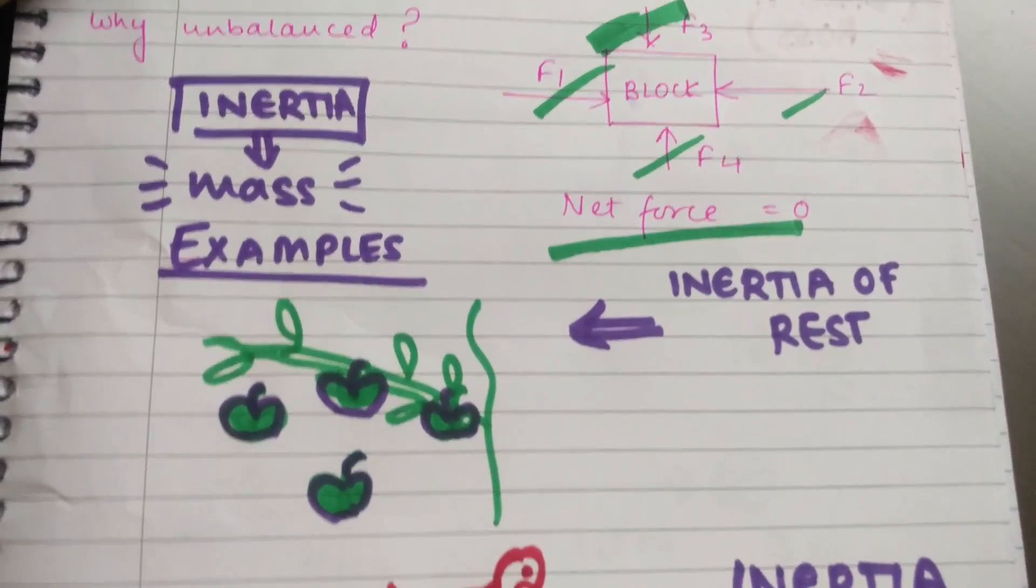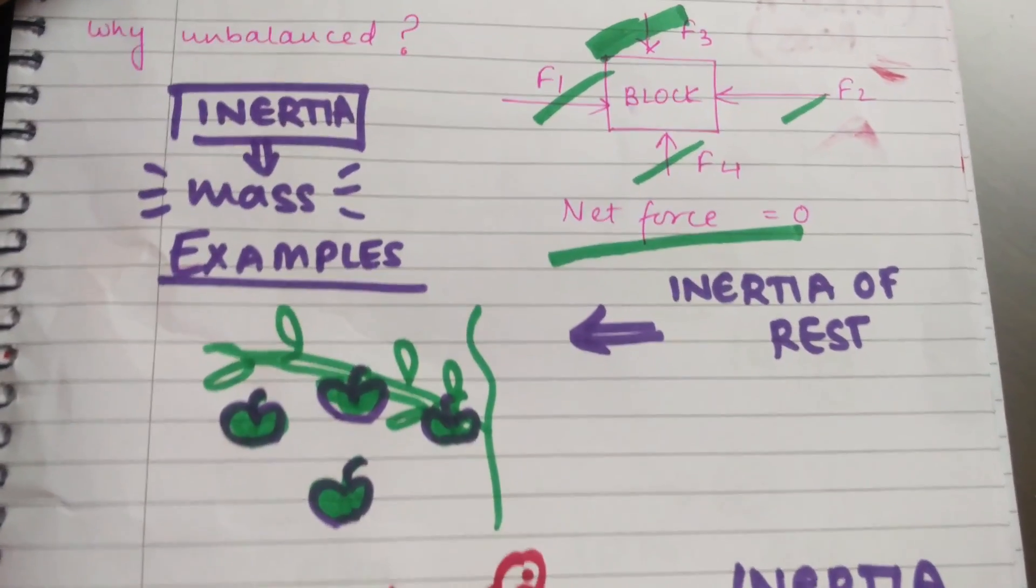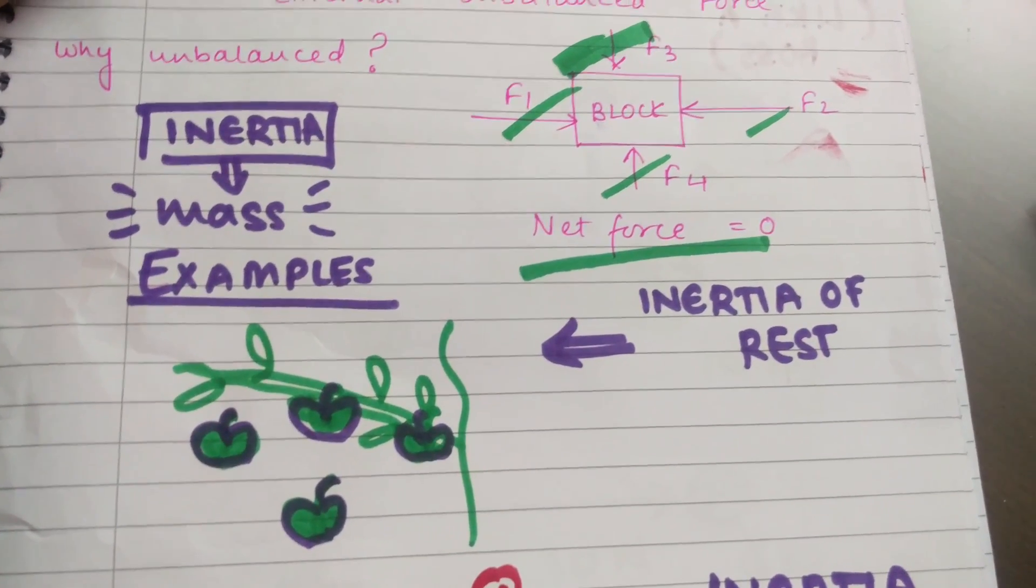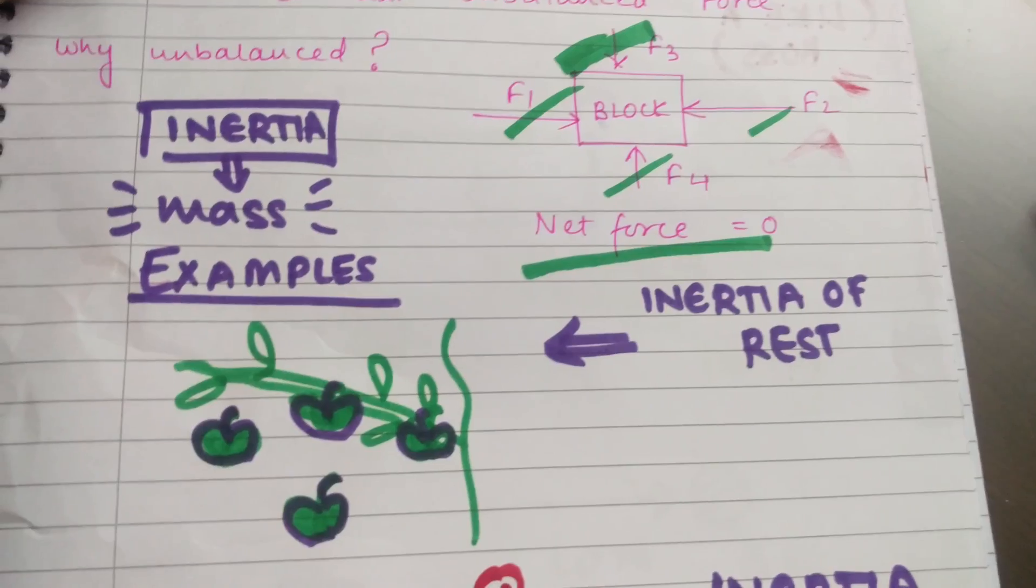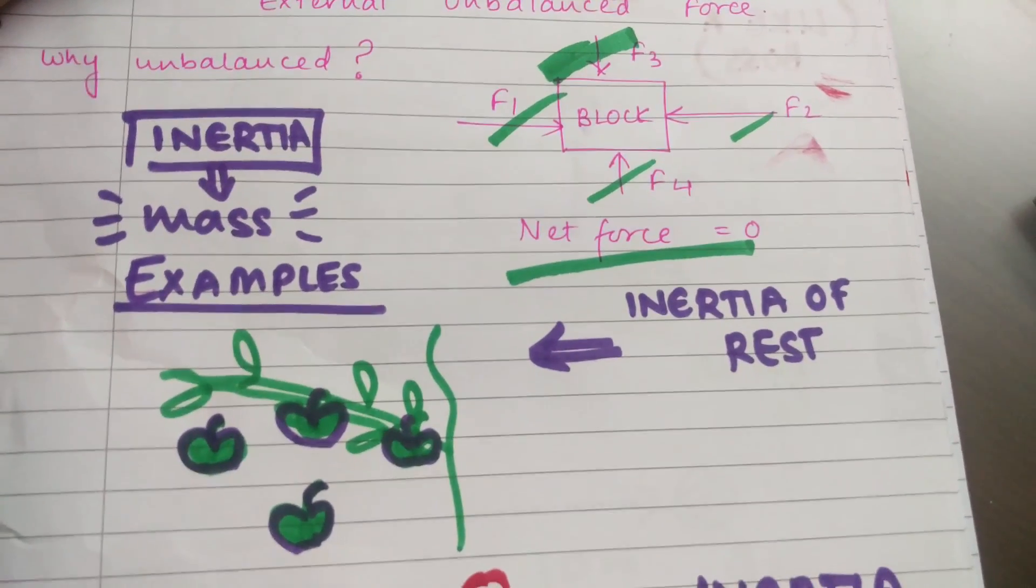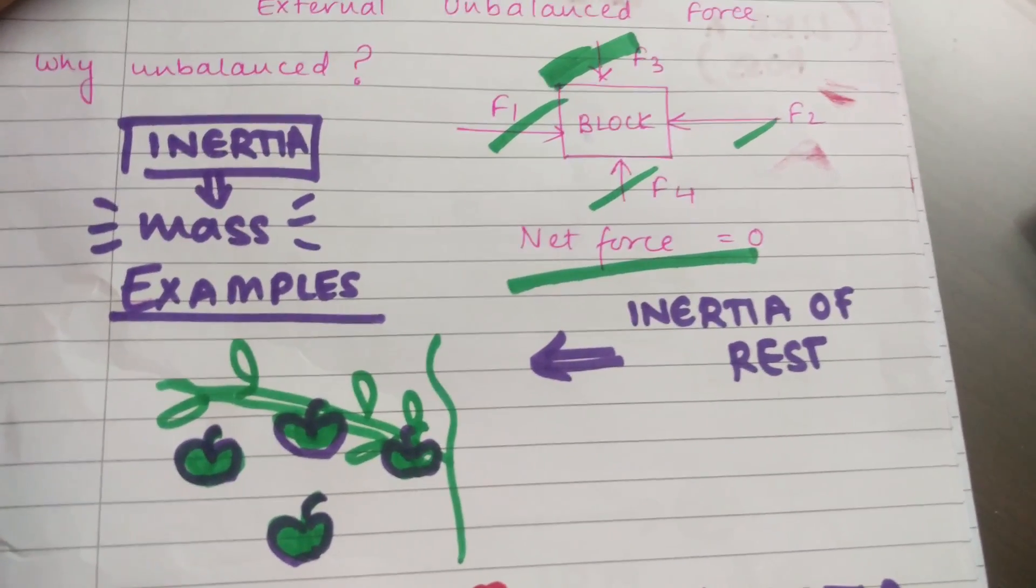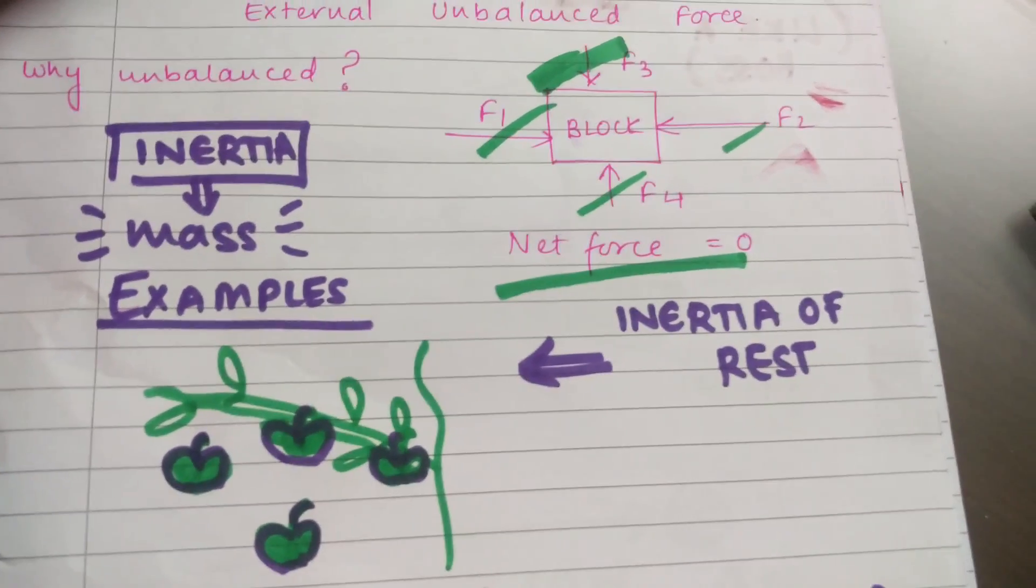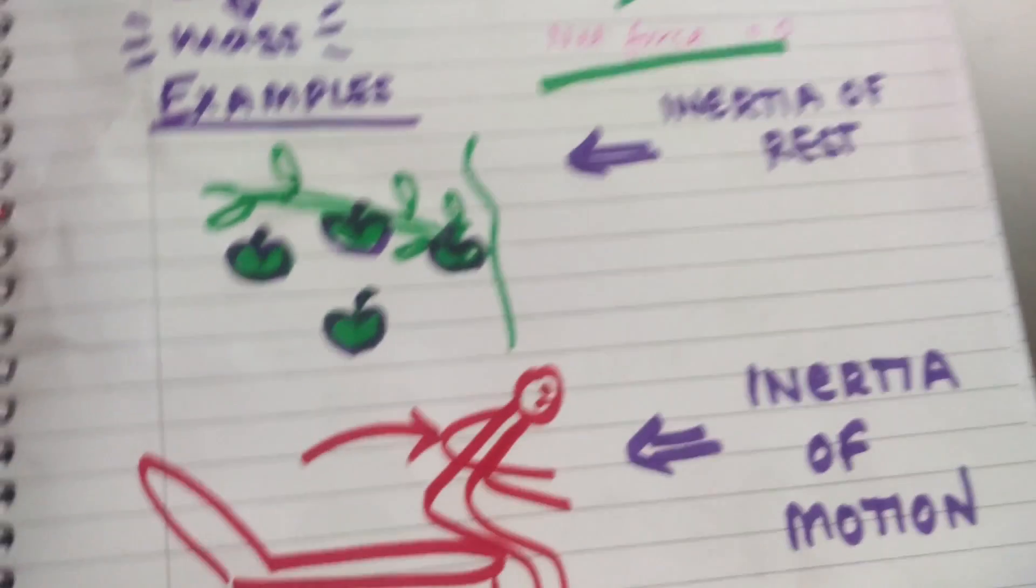If I shake the branches of a tree, why is it that the fruits fall down? This is because when I am shaking the branches of a tree, I am causing that branch, which was initially at rest, to come into motion. But the fruits have a tendency to remain in that same position at rest. Therefore, the branch moves, but the fruits remain at the same place and therefore get detached and fall to the ground.